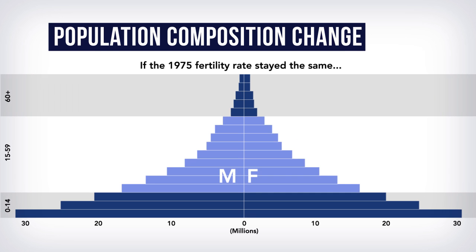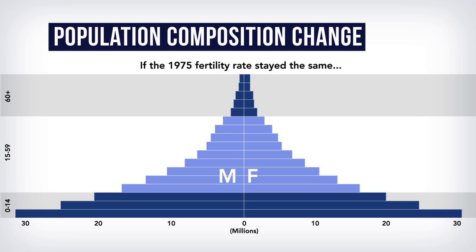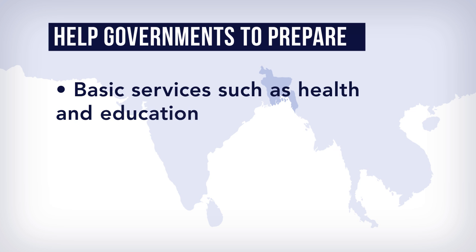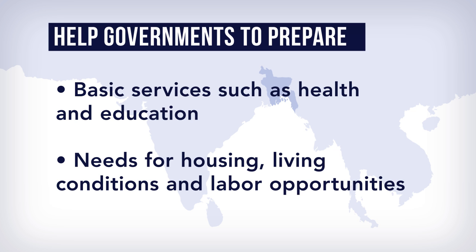What if fertility conditions had stayed the same since 1975? It could have doubled the population compared to what actually happened. This difference in the size of respective cohorts implies how governments should design basic services like health and education, as well as preparing for housing, living conditions, and labor opportunities.